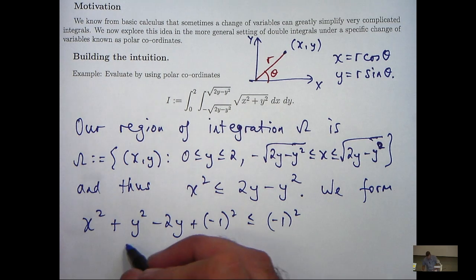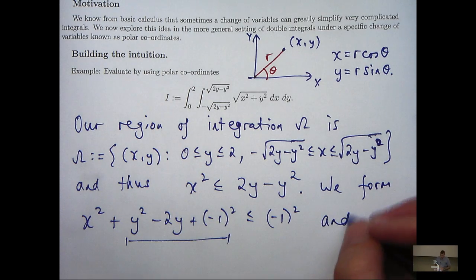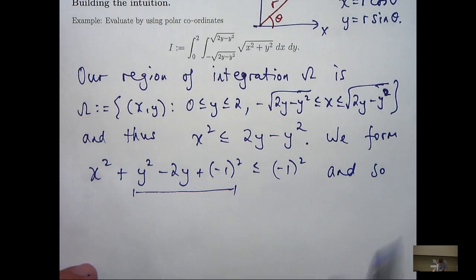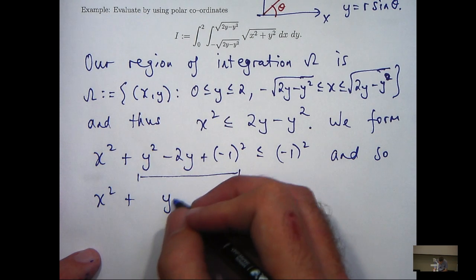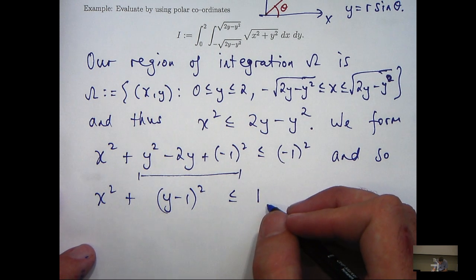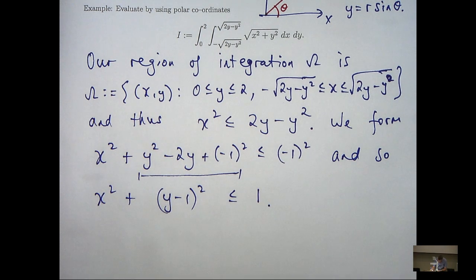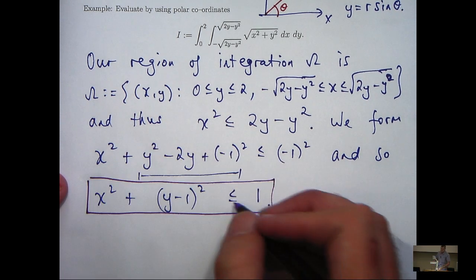So over here, I now have a perfect square. So I can factorize here, and form something that you should recognize.